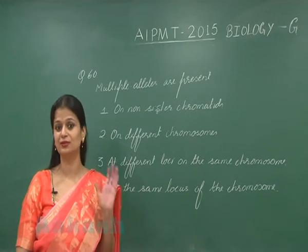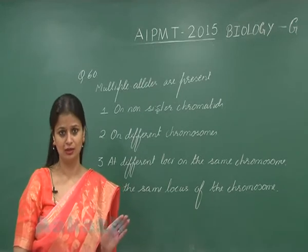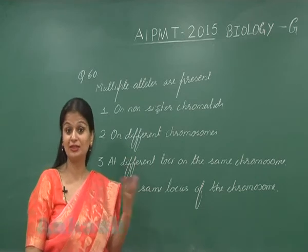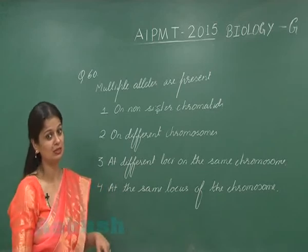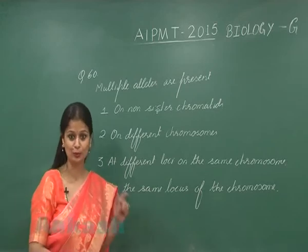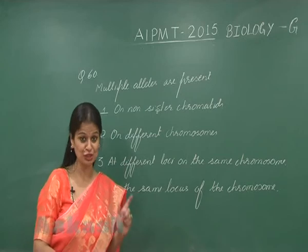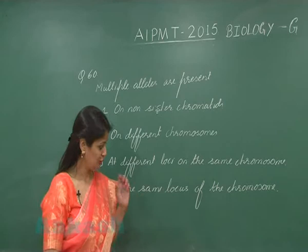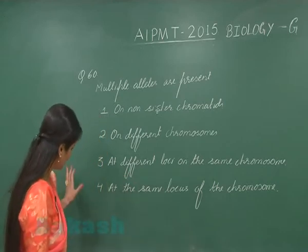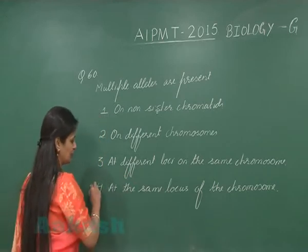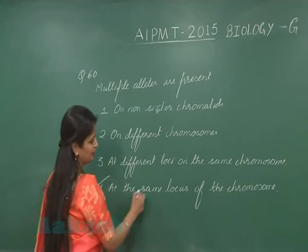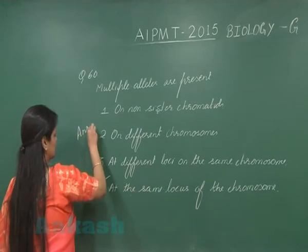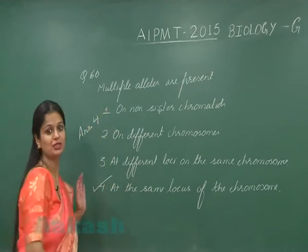Question number 60: multiple alleles are different forms of the same gene. Since they are different forms of the same gene, the position on the chromosome — that is, the locus — is the same. So the right answer is option number 4: multiple alleles are present at the same locus of the chromosome.